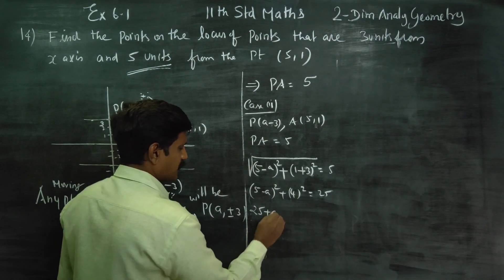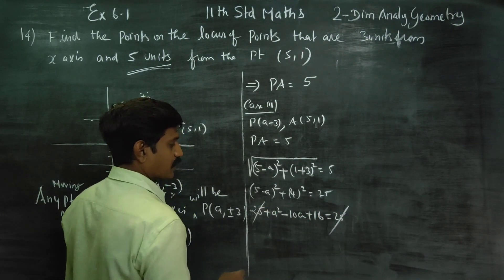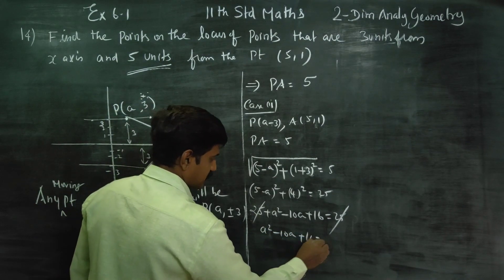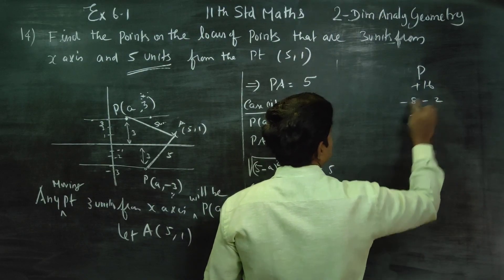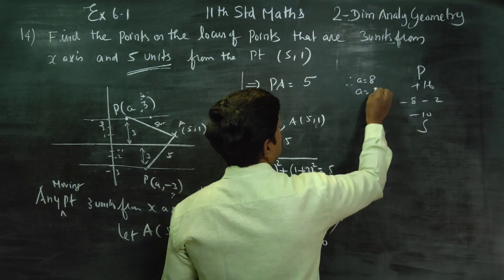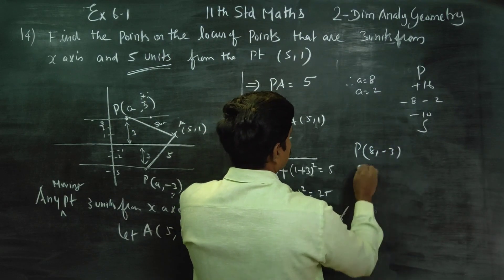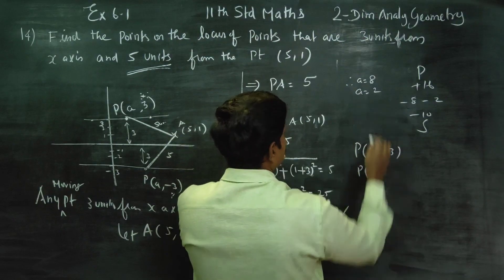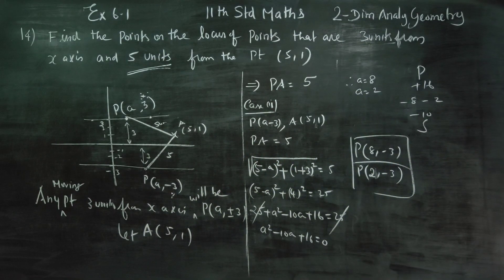Expanding (a minus b) squared: a squared plus b squared minus 2ab. So a squared minus 10a plus 16 = 25. Cancelling 25: a squared minus 10a plus 16 = 0. Using the quadratic formula, product of roots = 16, sum = 10. Solving: a = 2 or a = 8. So the points in Case 2 are (2, minus 3) and (8, minus 3).